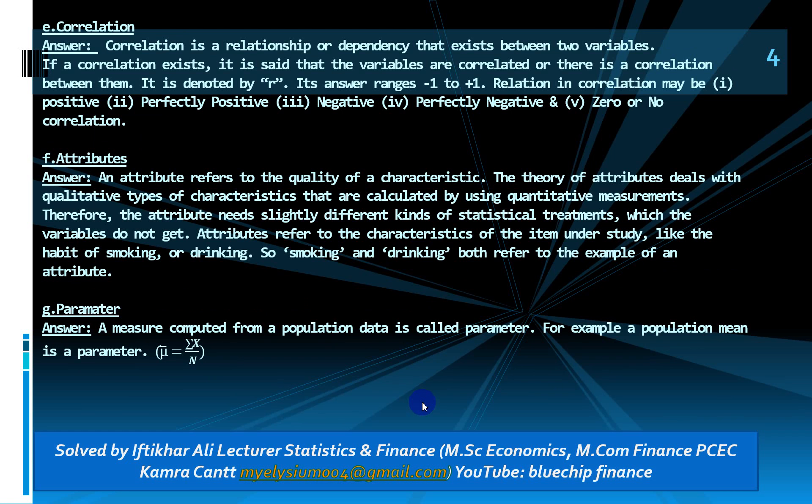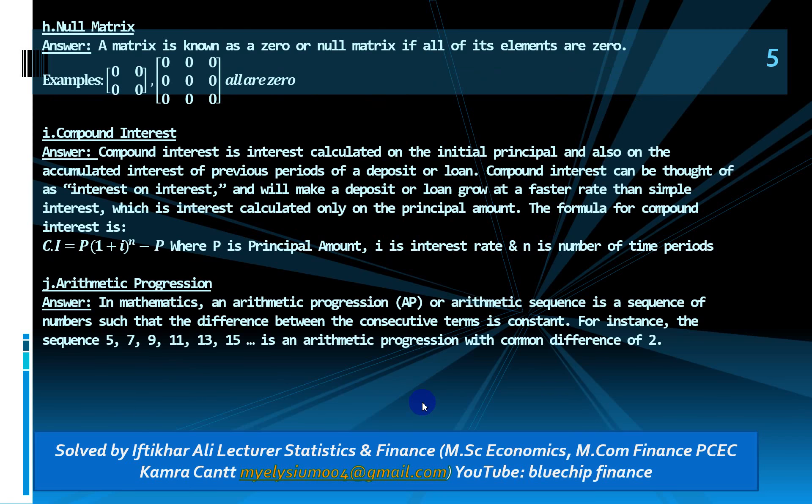These are all different types of parameters. Null matrix: a matrix is known as a null or zero matrix if all its elements are zero. Compound interest: compound interest is interest calculated on the initial principal and also on the accumulated interest of previous periods of deposits or loans.